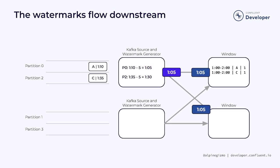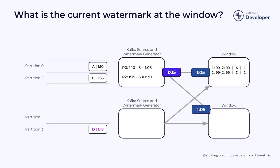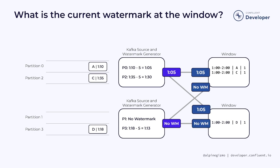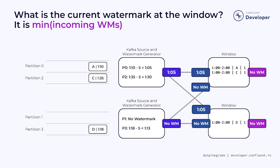After generating this watermark, the source sends it downstream to both window operators. The watermark at each window instance needs to reflect the watermarks coming in from each of the two sources. Turning to the other source: so far it has only consumed an event at 1:18 from partition 3. Based on this event, this source has generated a watermark at 1:13 for partition 3. But lacking any events for partition 1, that partition doesn't yet have a useful watermark. As a result, the source will send this information downstream, and the current watermark for any operator with multiple inputs is the minimum of the incoming watermarks. So the window operators don't yet have a useful watermark.